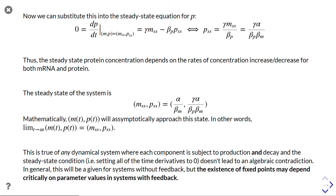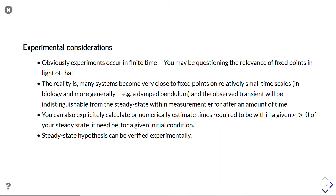Some experimental considerations: experiments occur in finite time, so you may question the relevance of fixed points since they're only asymptotically approached. However, many systems get very close to fixed points on relatively small timescales. For example, a damped pendulum reaches its stable equilibrium in a reasonably small time. The observed transient becomes indistinguishable from the steady state within measurement error after some time, and you can explicitly calculate or numerically estimate the time required to be within a given error of the steady state.